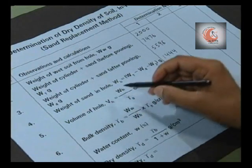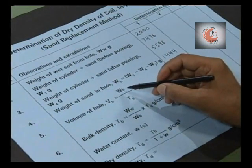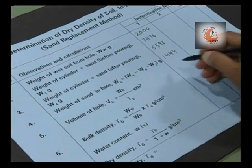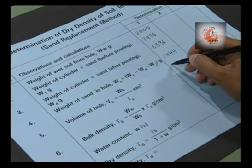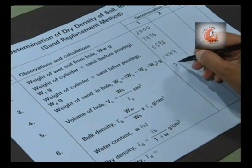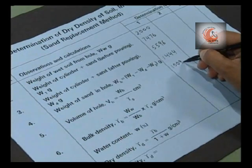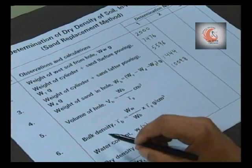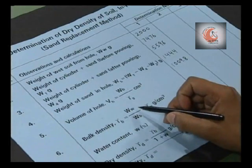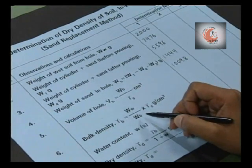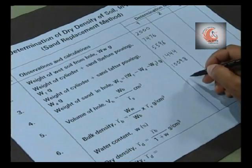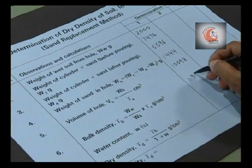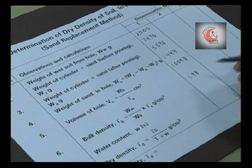Volume of the hole is the ratio of weight of sand in hole per unit bulk density of sand. Bulk density is the ratio of weight per unit volume. So in this case, the bulk density is 1.98 grams per centimeter cube.